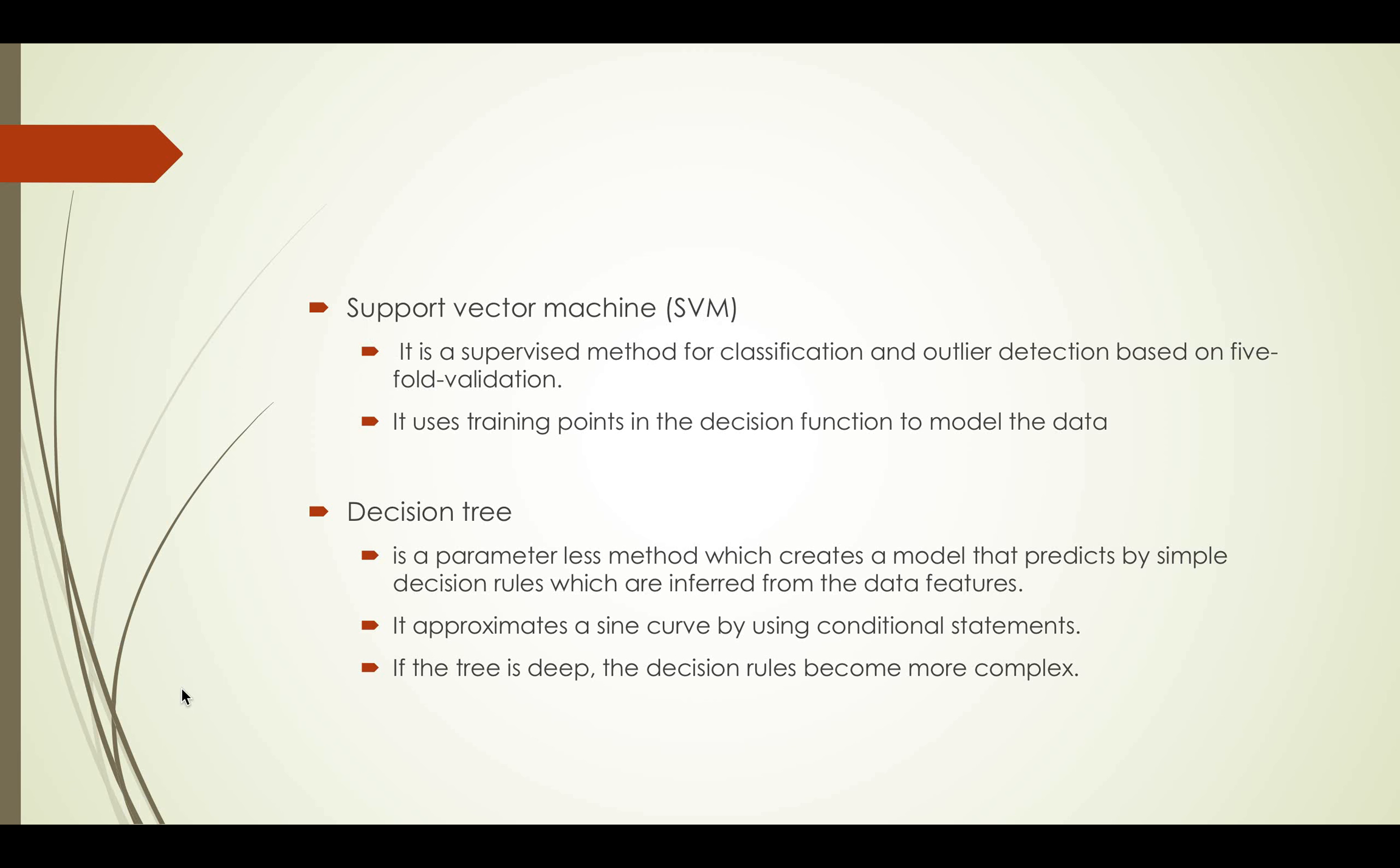Decision Tree is a parameter-less method which creates a model that predicts by simple decision rules which are inferred from the data features. It approximates a sign curve by using conditional statements. If the tree is deep, the decision rules become more complex.